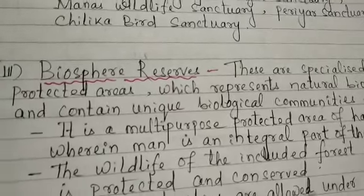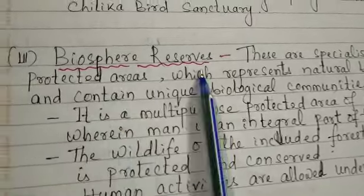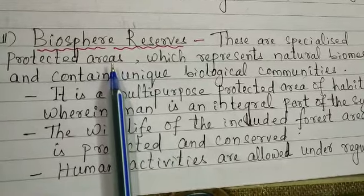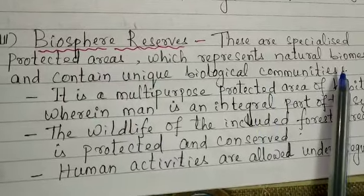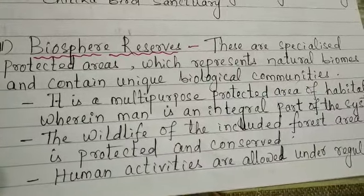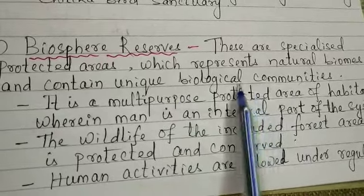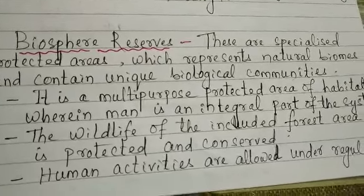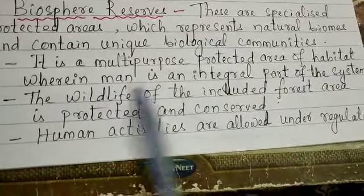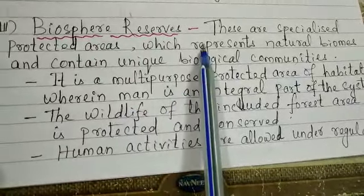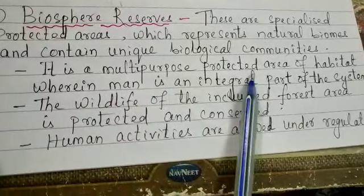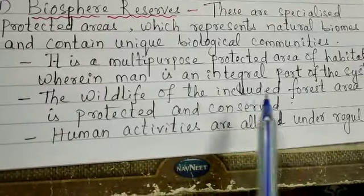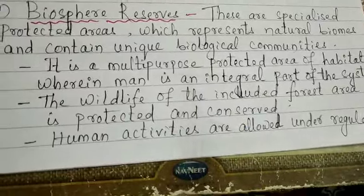Biosphere reserves are specialized protected areas larger than national parks and wildlife sanctuaries. They represent natural biomes and certain unique biological communities. They are taken care of under the MAB — Man and Biosphere — project. A biosphere reserve is a multi-purpose protected area of habitat wherein humans are considered an integral part of the system, and the wildlife of the included forest area is also protected.